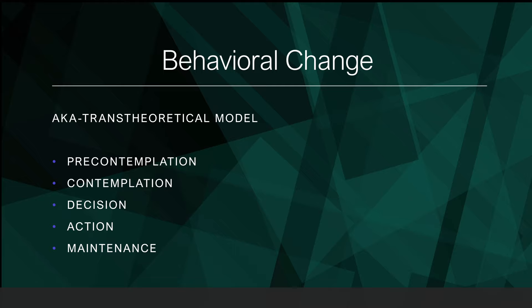Finally, we have the Transtheoretical Model, also known as the hoped-for outcome behavioral change model. It states that behavioral change is a process that goes through different stages. Each stage describes different levels of motivation or readiness to change. The model identifies five stages. Stage one, pre-contemplation, is where individuals have no intention of adopting a recommended health behavior but are learning about it. Stage two, contemplation, is where individuals are considering adopting the recommended behavior.